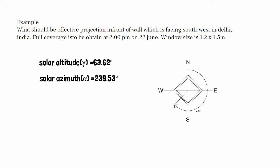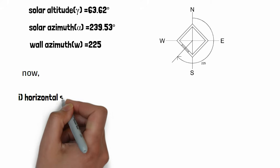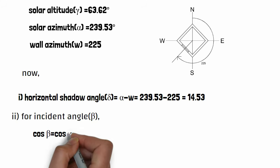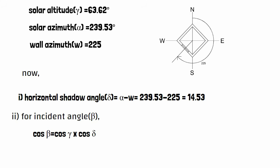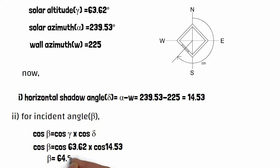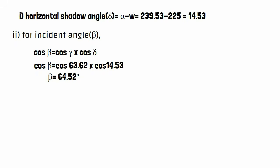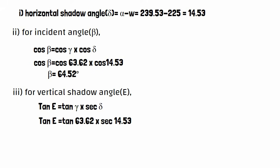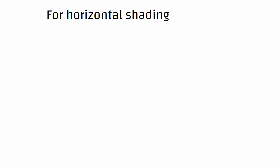Wall azimuth angle from north to southwest will be 225 degrees. Horizontal shadow angle is the subtraction of azimuth angle and wall azimuth angle. We then calculate the incident angle, vertical shadow angle, and finally the projection for horizontal and vertical shading devices.